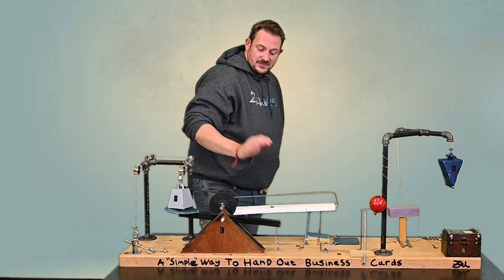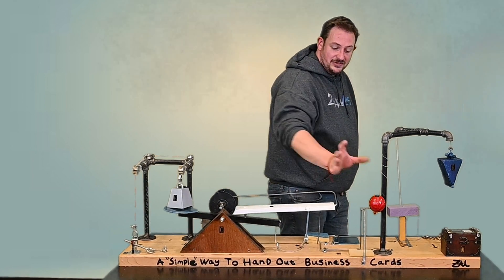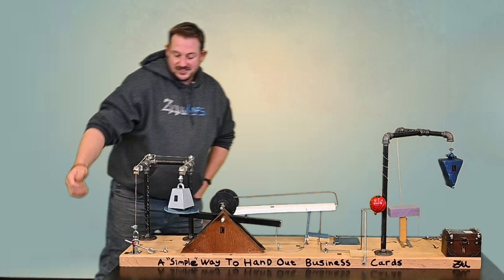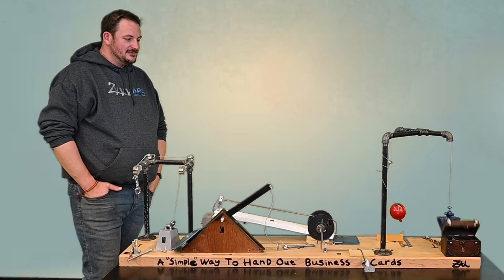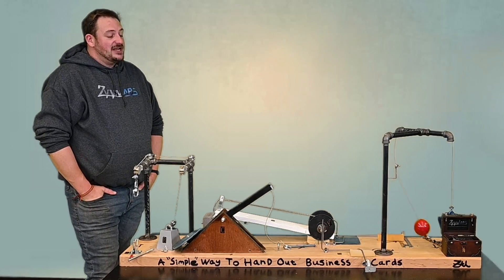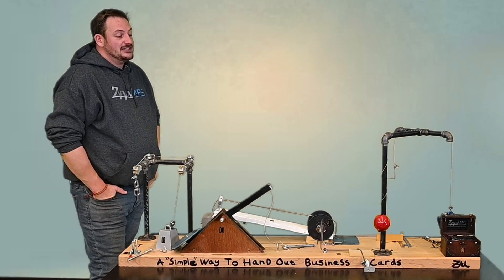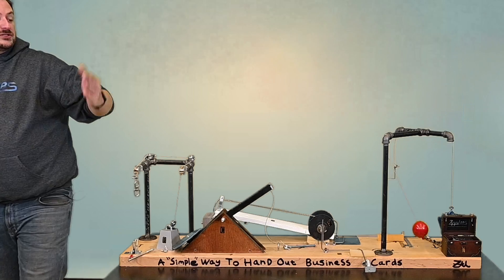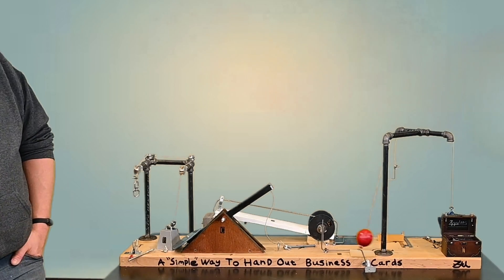Pulley, lever, incline plane, wheel and axle, screw, and wedge. And just to demonstrate one more time. A little early on the one because there was a shake, but the tether ball would have hit the blocks, causing the wedge to drop. Pulls the chain down and opens the box, revealing my business cards.